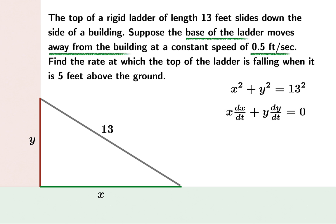Now we're told that the base of the ladder moves away from the building at a constant speed of 0.5 feet per second. In other words, dx/dt is 0.5.